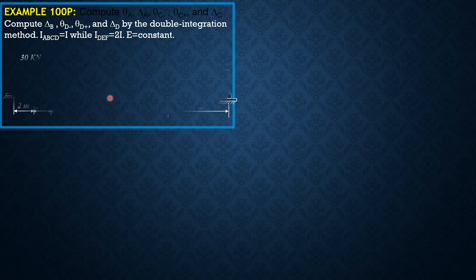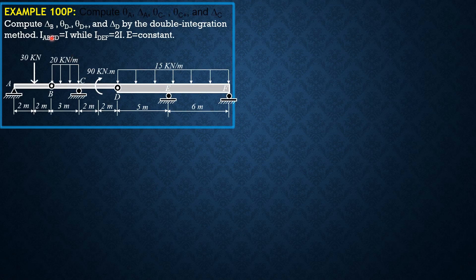Hello, fellow engineers. This is our last example for beam deflection by the double integration method. Compute the deflection at B, slope just to the left, slope just to the right, and the deflection at D. The moment of inertia of portion ABCD is I, while for DEF it is 2I. E is constant.